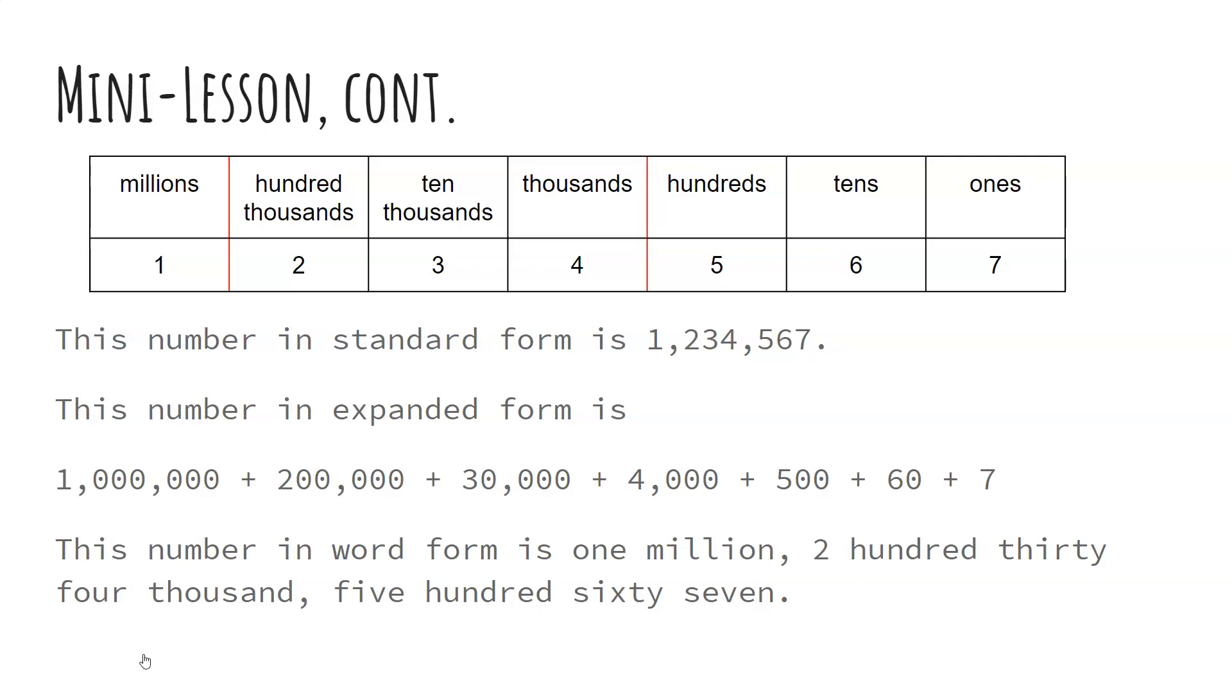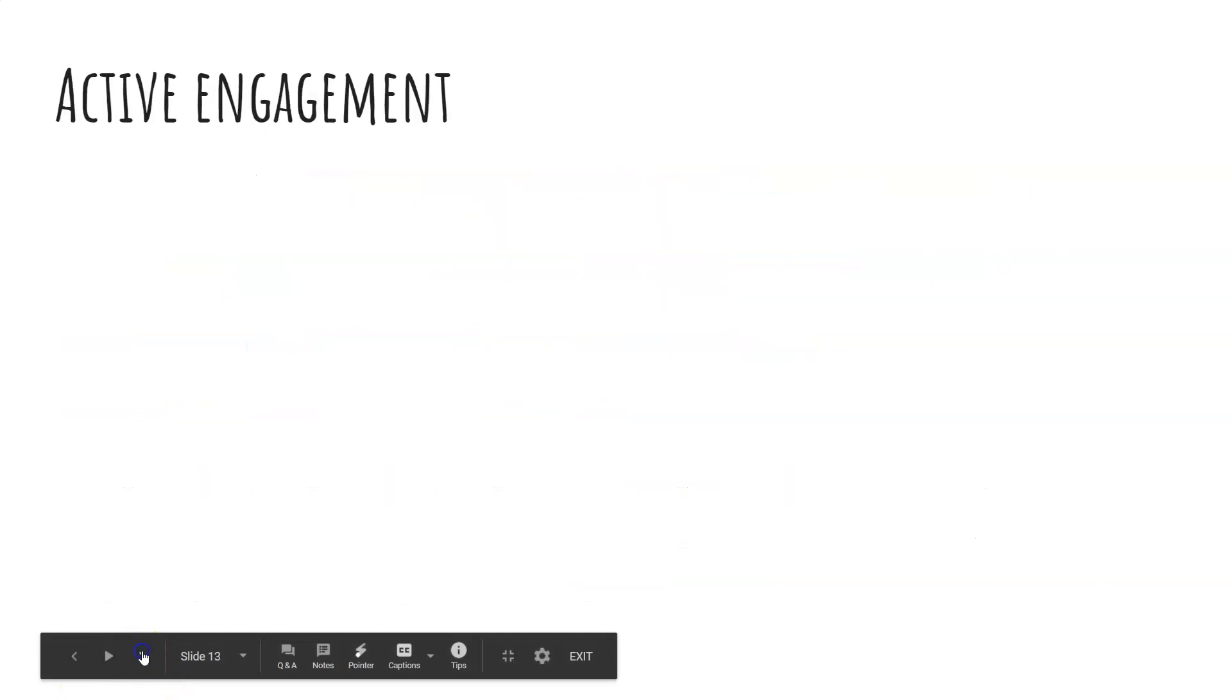And all together in word form, we read that number 1,234,567. And I just realized I put a number two instead of the word two. So that is my mistake. I will fix it because we should see only words in word form.